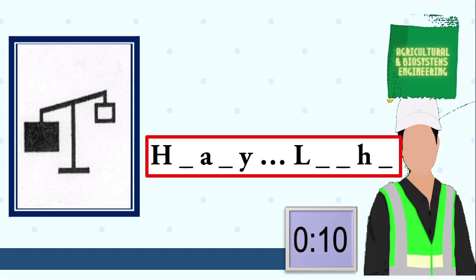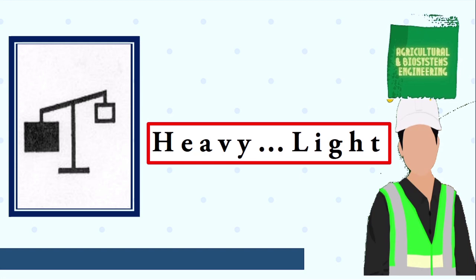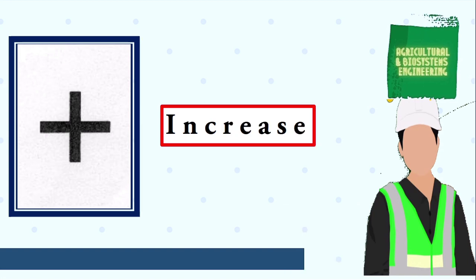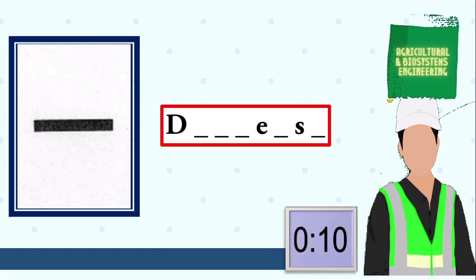Next symbol, your 10 seconds starts now. The answer is heavy light. Next symbol, your 10 seconds starts now. Next symbol, your 10 seconds starts now. The answer is decrease.